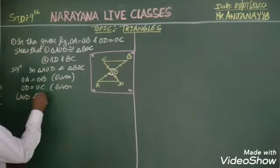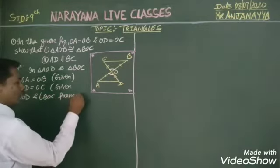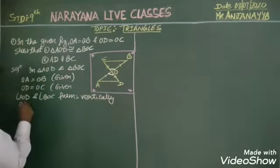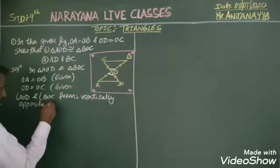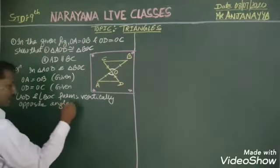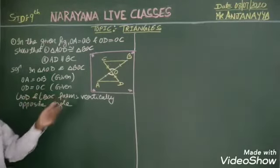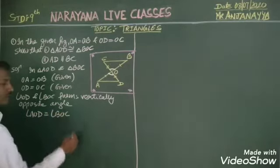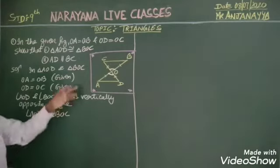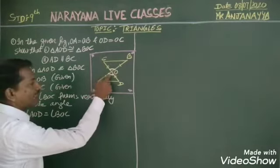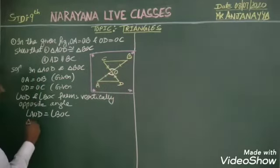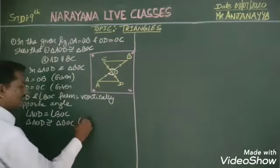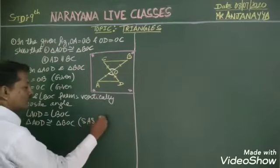And we know that vertically opposite angles are equal, so I can say angle AOD is equal to angle BOC. Therefore, by side-angle-side, these two triangles — triangle AOD is congruent to triangle BOC by SAS congruence rule.